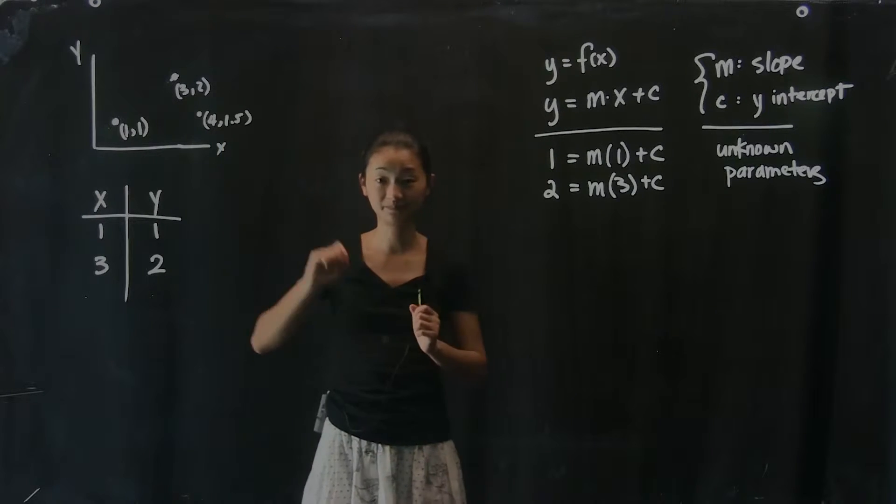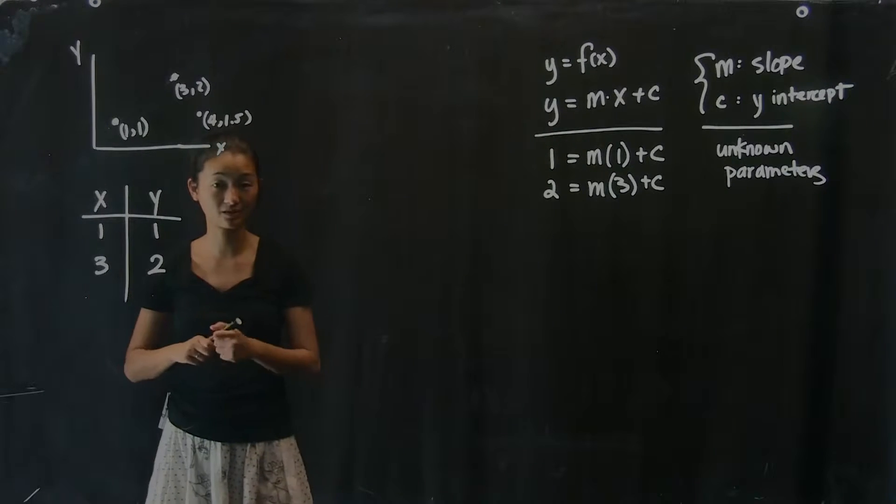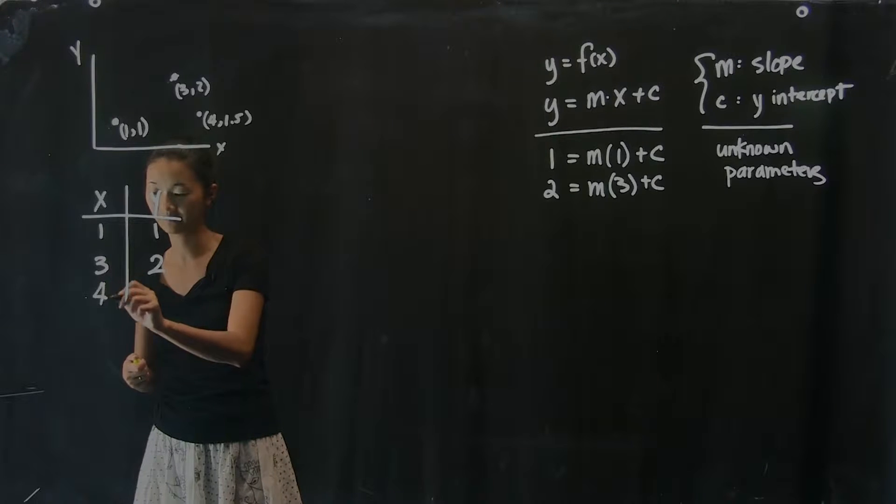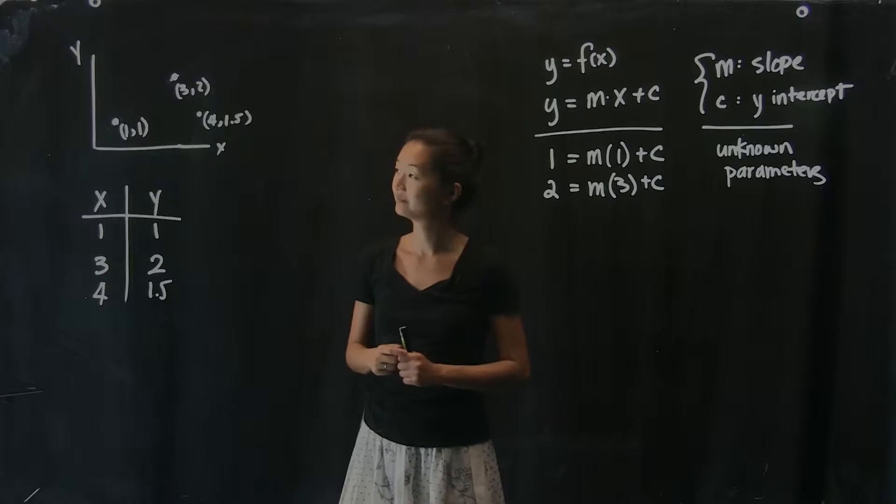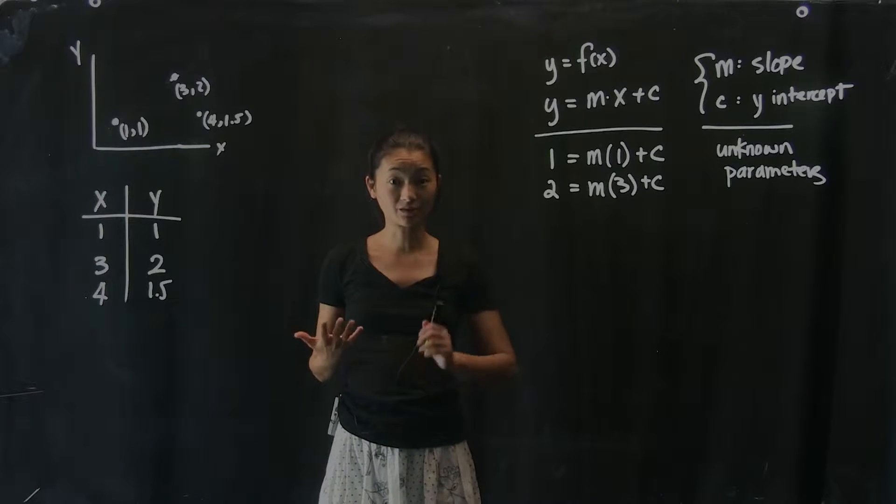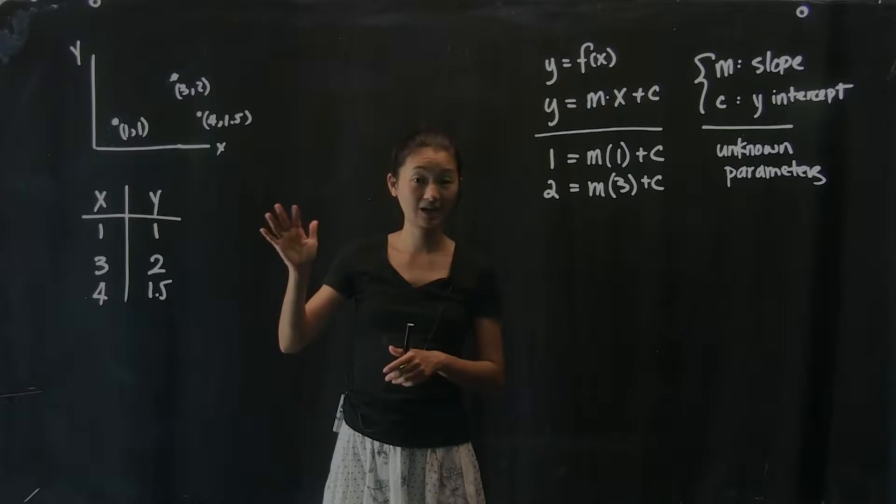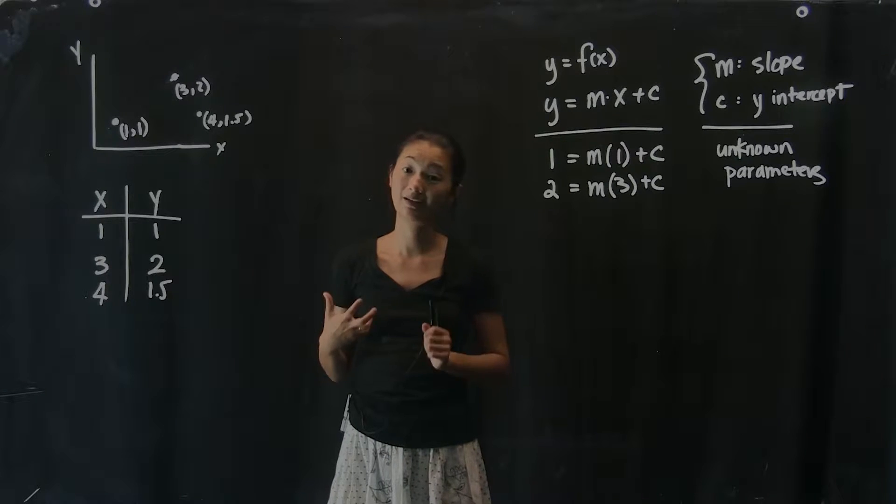That's the challenge, and we're going to update my list of coordinates here that I want to fit for 1.5. Now, suddenly we have a problem. As you can see, very geometrically and intuitively, there does not exist an actual line that goes through all three of these points. They do not lie in a line.